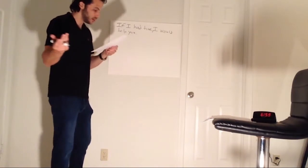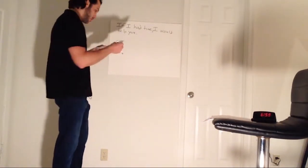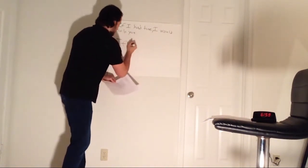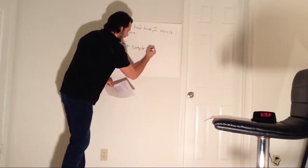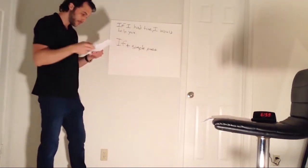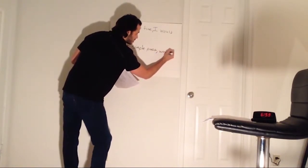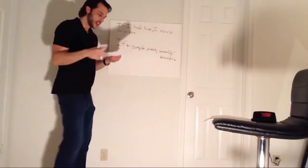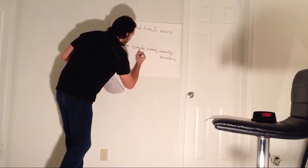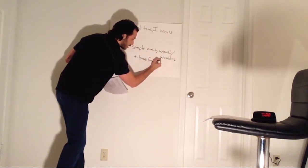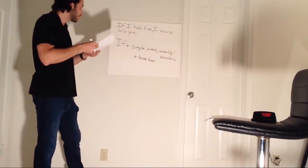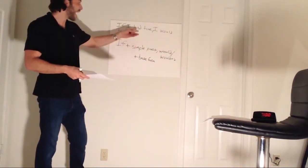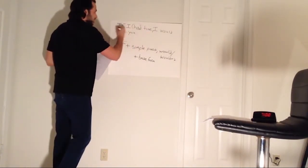So let's go over the form of the second conditional. It goes like this: if plus simple past — so if plus the simple past — and then we have would, or wouldn't — you see that here, right? The would or the wouldn't, and then plus the base form of the verb. So if — let's look at the example we had before — if I had time, so the simple past: had.